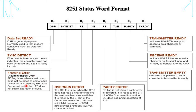D5 is framing error — the receiver, after checking the start bit, accepts the data bits and parity bit, then checks for the stop bit. If the stop bit is not present at the end of the character, the framing error bit is set to indicate a framing error. D6 is synchronous detect — when set for internal synchronous detect, it indicates that character synchronization has been achieved and the 8251 is ready for data. D7 is DSR (Data Set Ready) — a general purpose bit normally used to test modem condition, such as data set ready.